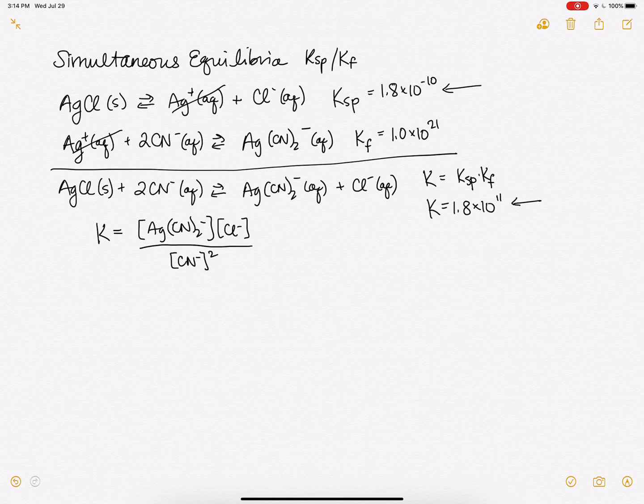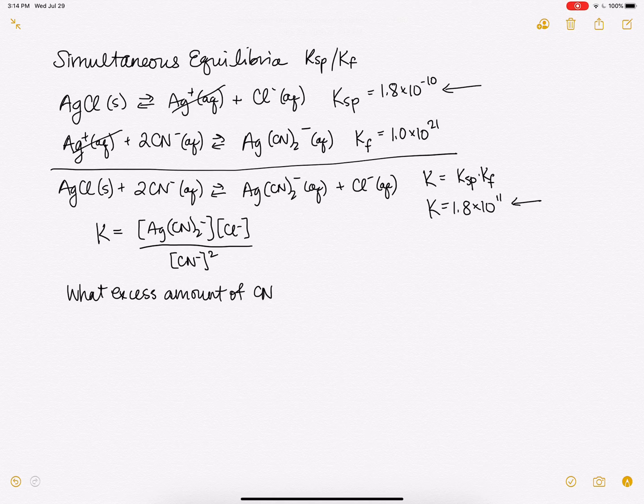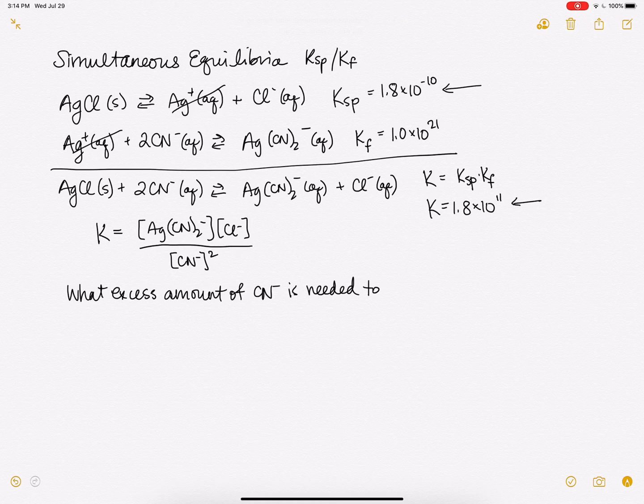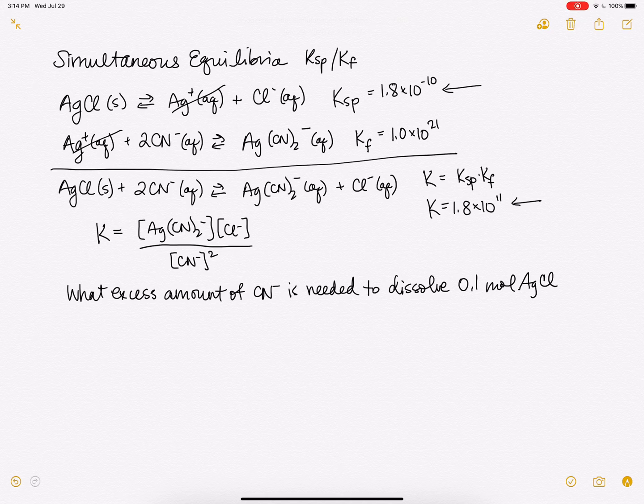This is the question: What excess amount of cyanide is needed to dissolve 0.1 moles of AgCl in one liter of solution?